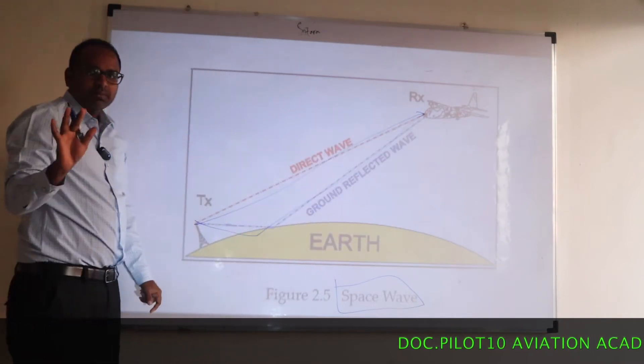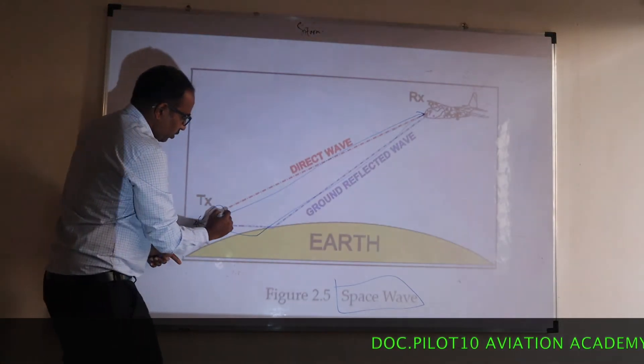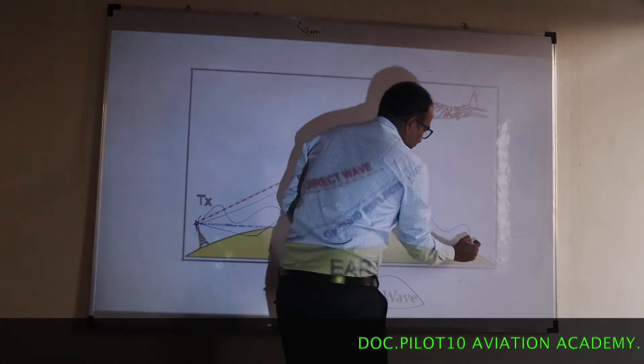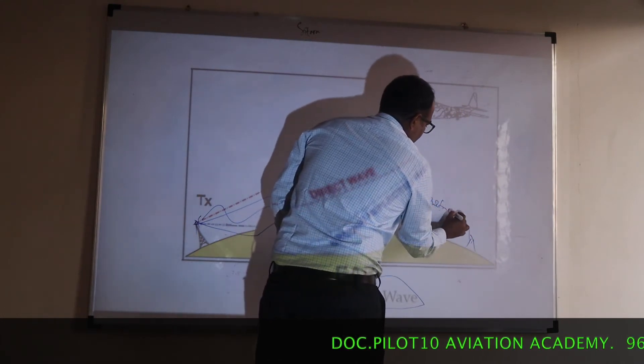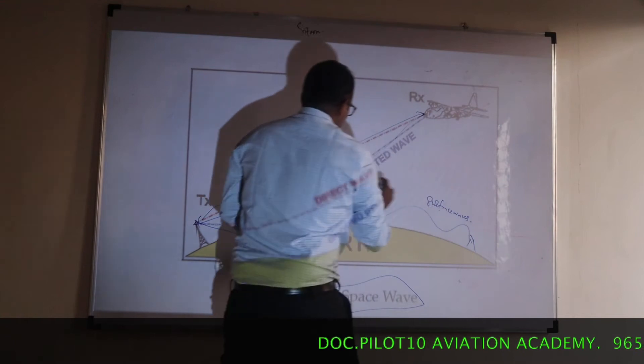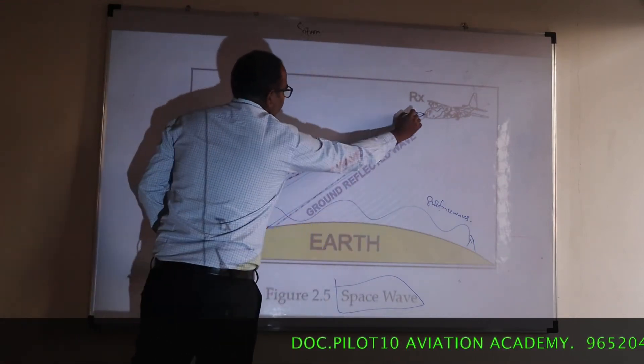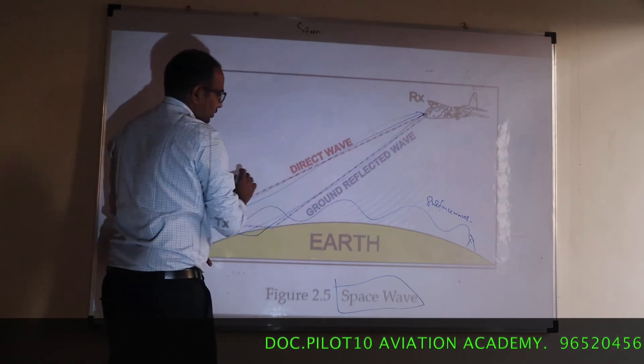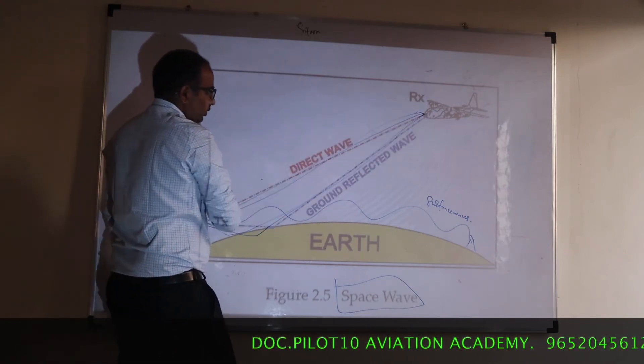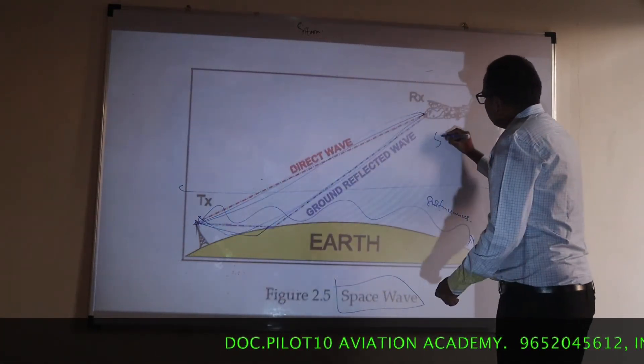So there were only two types of waves. One which traveled along the curvature of the earth, they were called as surface waves. And the second type was traveling directly, direct wave, ground reflected wave. These waves, direct wave and ground reflected wave, were named as space waves.